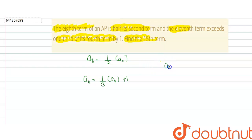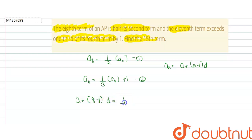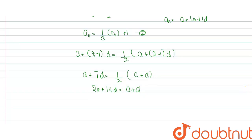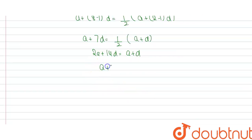We know that the nth term of an AP is given by a plus (n minus 1) into d. Using this formula, a8 = a + 7d equals half of (a + d). Cross-multiplying gives 2a + 14d = a + d, and further solving we get a + 13d = 0. This is equation three.